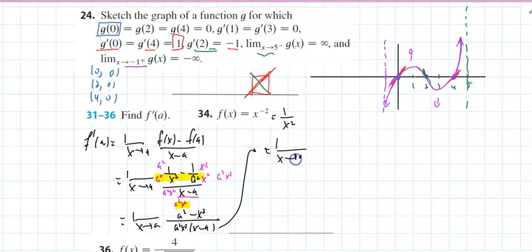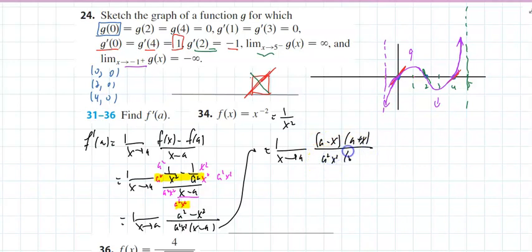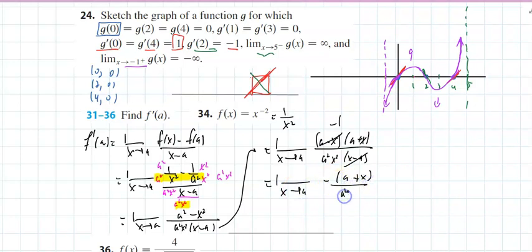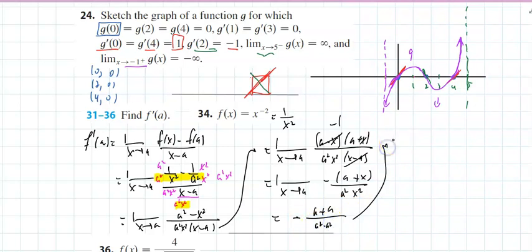That's the limit as x approaches a. Reading the numerator: a² minus x², and the denominator is a²x² times (x minus a). Factoring: (a minus x)(a plus x) over a²x²(x minus a). Canceling those — they're opposites, giving a negative 1. Throwing in x = a: negative a plus a over a² times a², which is negative 2a over a⁴.